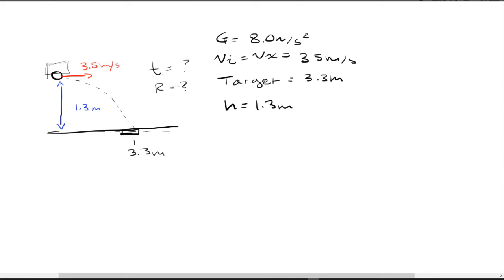So we want to know the range. Let's get to it. The way that we're going to figure out time is we're going to use the h equals 1/2 a t squared equation and we're just going to plug in our numbers and solve for what we don't know. So 1.3...